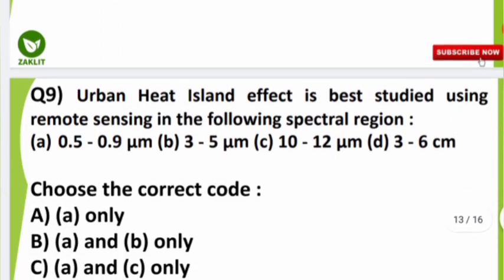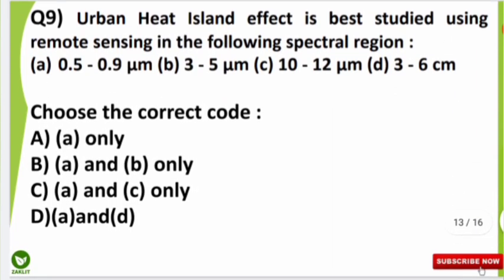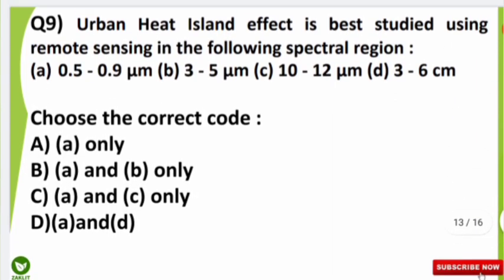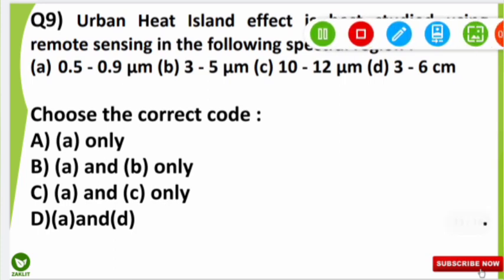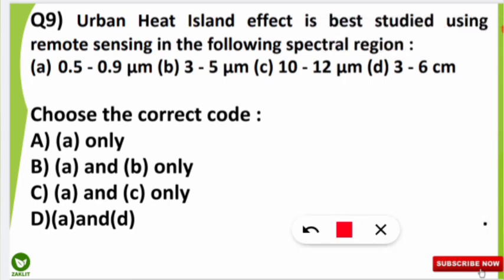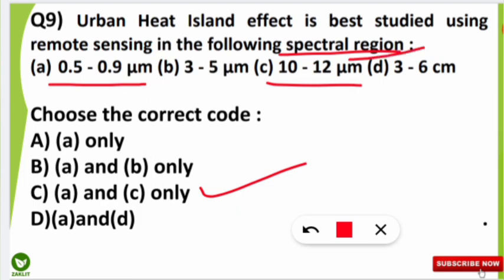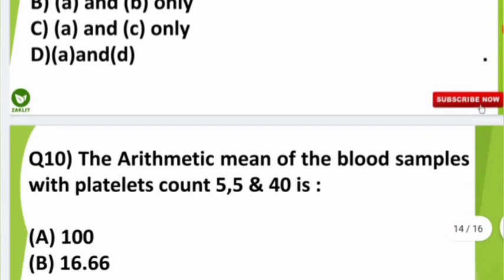The ninth question was from remote sensing: the urban heat island effect is best studied using remote sensing in which spectral region? The correct answer is both A and C — 0.5 to 0.9 micrometers and 10 to 12 micrometers are the spectral regions used in remote sensing to study the urban heat island effect.